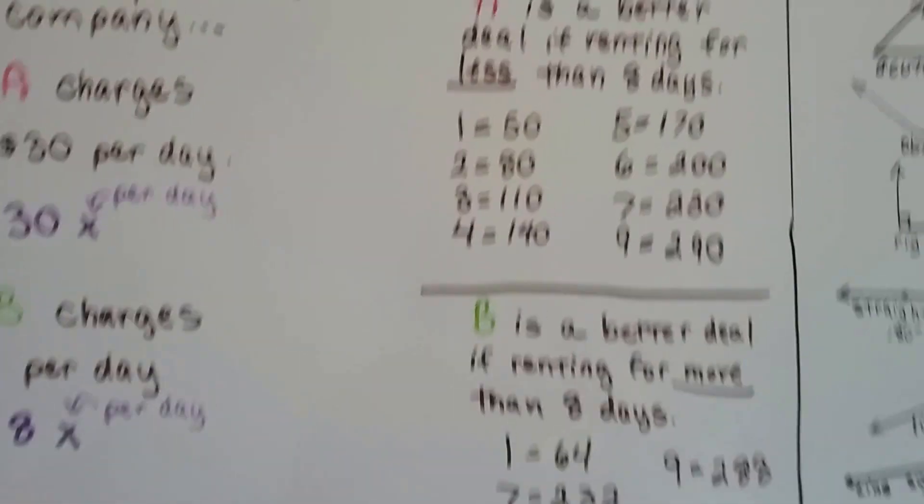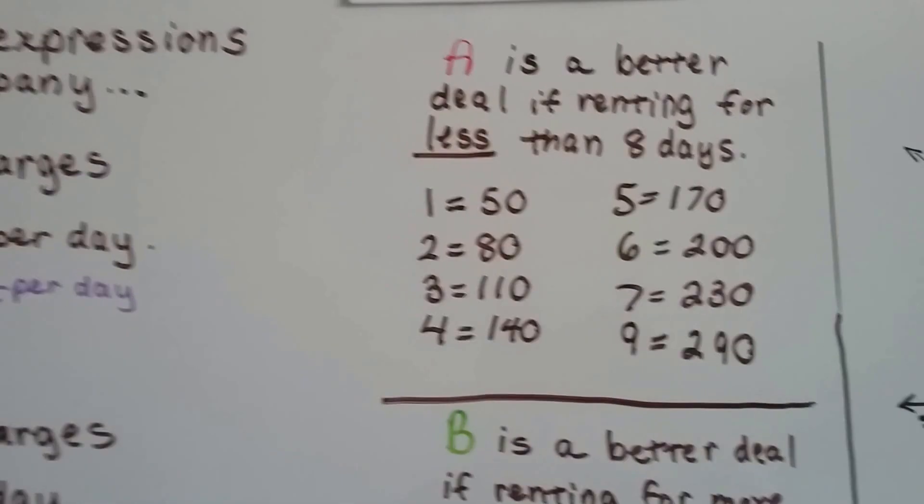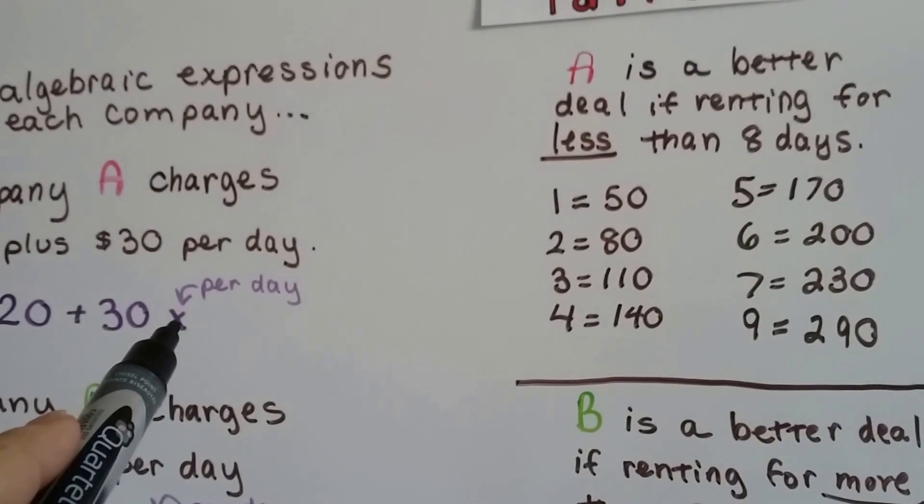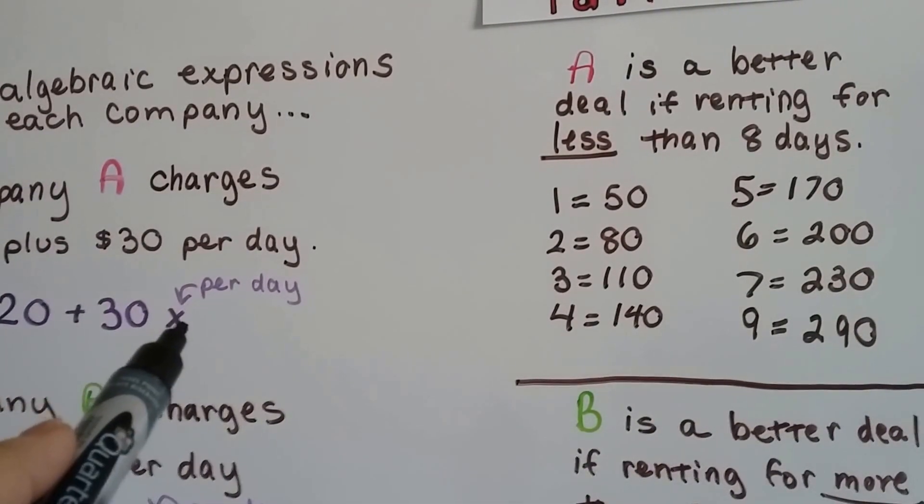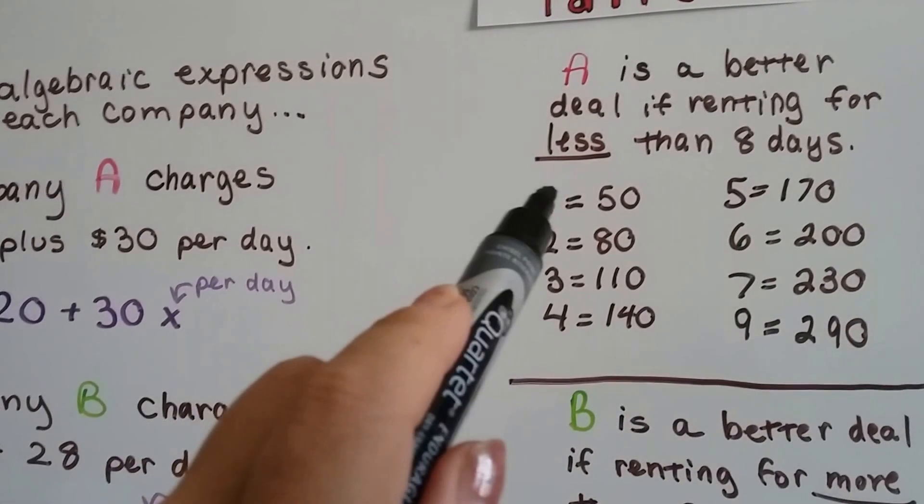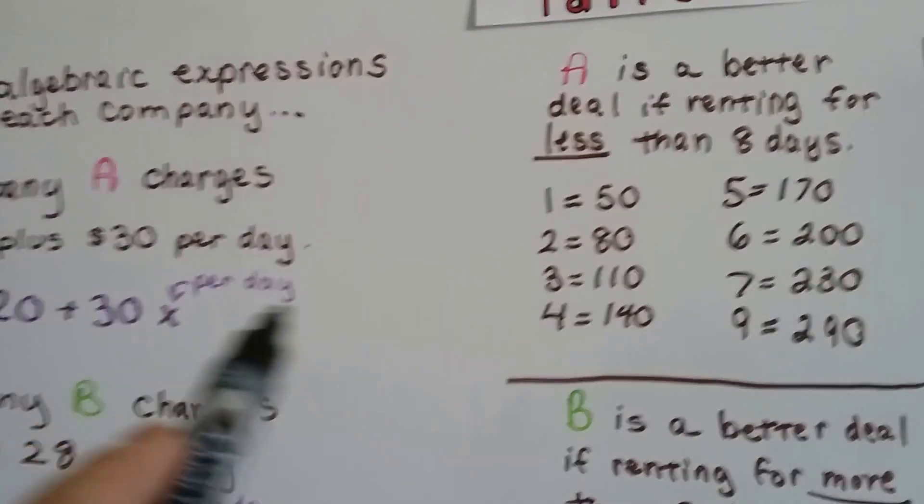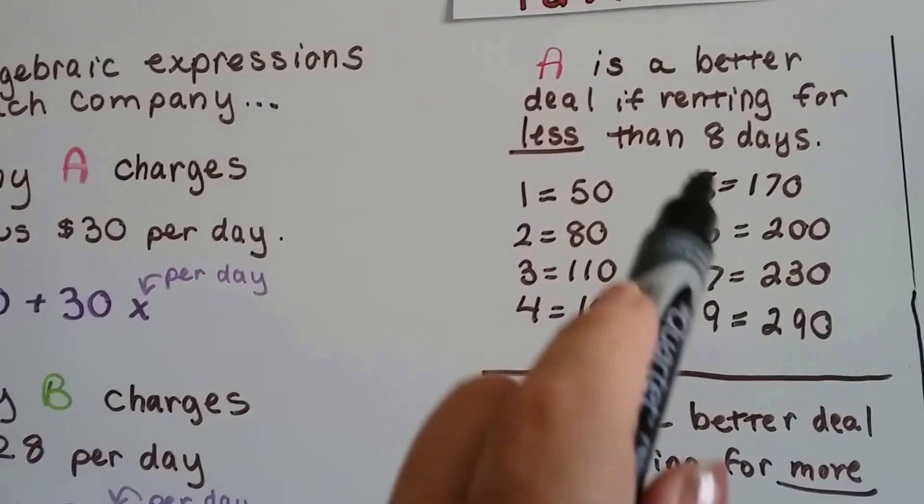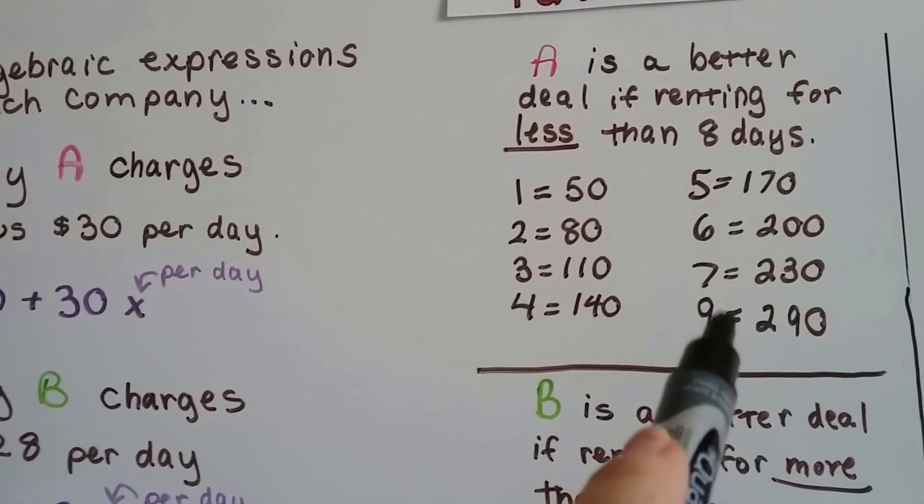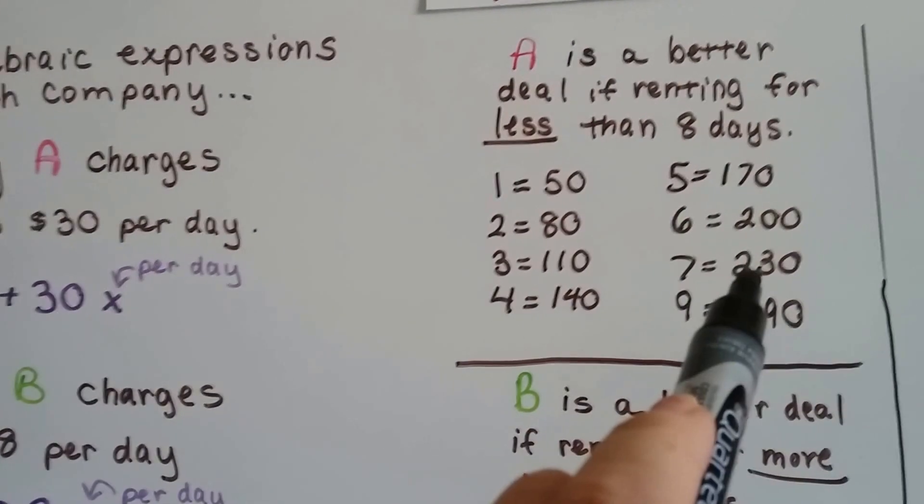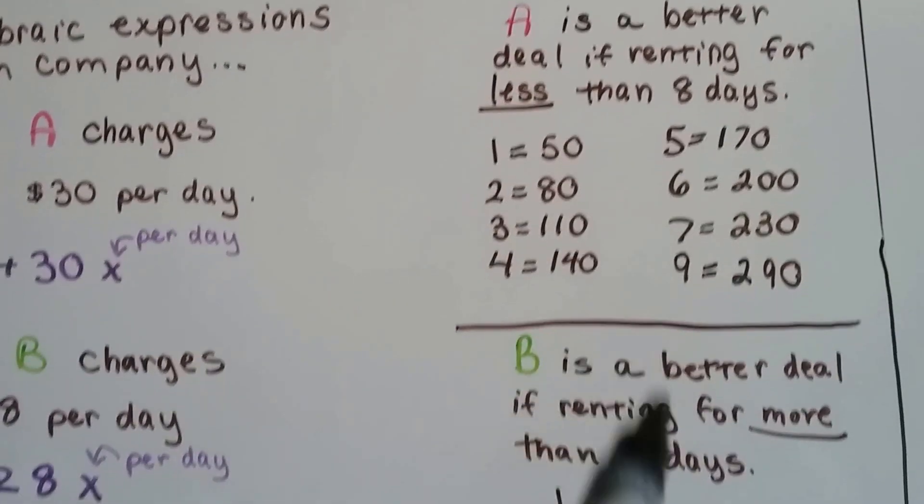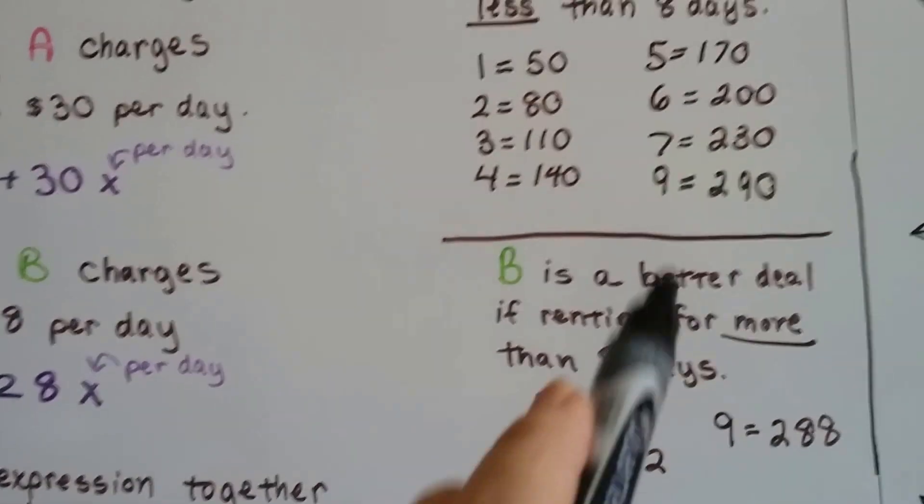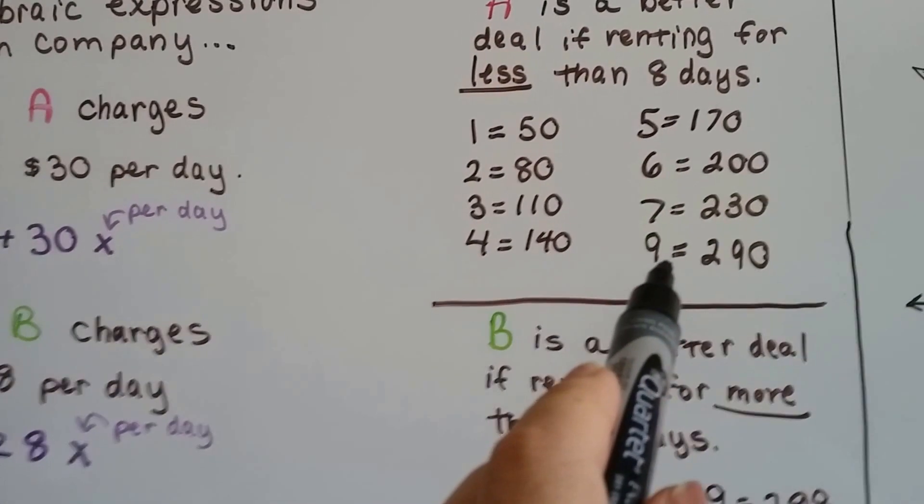So, look at this. Company A is a better deal if renting for less than 8 days. All we have to do is plug in the number of days into the x. 30 times 1 is 30, plus 20 is 50. So day 1 would be 50. And if we plug the day number into here as x, we can see all the values of how much it would cost per day. Look at day 9 and day 7. Day 7 is $230 for Company A. Look at day 7 for Company B. It's $232. It's $2 more. But look at the price for day 9 for Company A. It's $290. Where for B, it's $288.